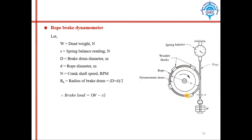The spring balance indicates the force acting in that section of rope. In the downward section, the load is W. The brake load equals W minus S, where W is the dead weight and S is the spring balance reading in Newtons. Capital D is the diameter of the drum, small d is the diameter of the rope, N is the crankshaft speed in RPM, and Rb is the radius of the brake drum.